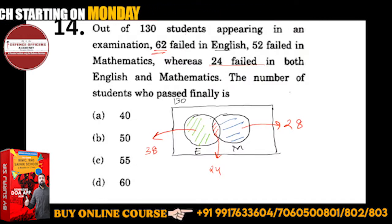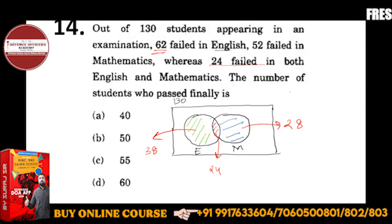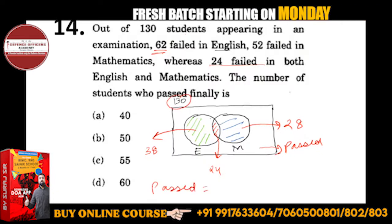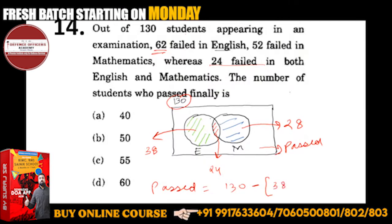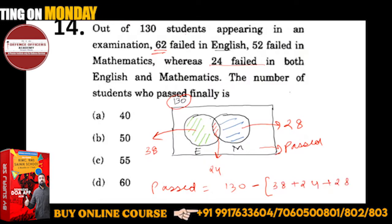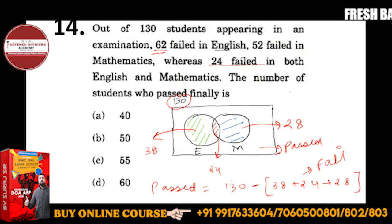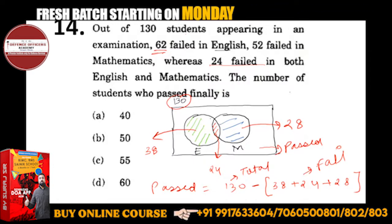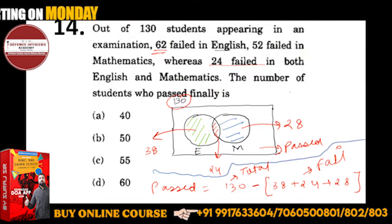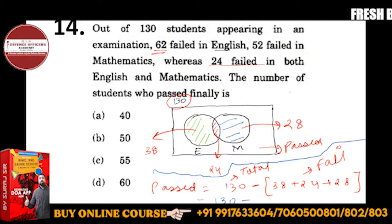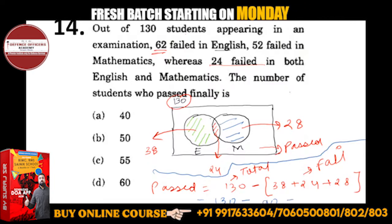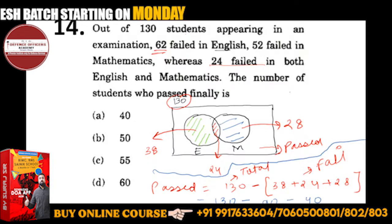Now we need to find the number of students who passed. The failed students are in the sets; the passed ones are outside. Total failed is 38 plus 24 plus 28. From 130, subtract the total failed: 130 minus 90 equals 40. So the answer is 40. I hope you understand.